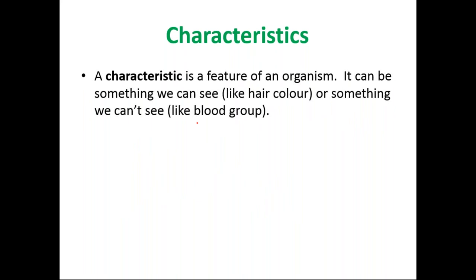Characteristics is a feature of an organism. It can be something we can see, like hair color, or something we can measure, like blood group. Your appearance is also your feature. For example, in the classroom, Adnan looks different, Yusef looks different, another student looks different. These differences between students — between living organisms — are called variation. And also, there are a lot of variations between plants.